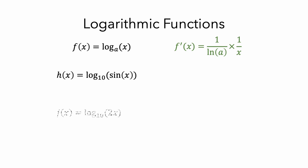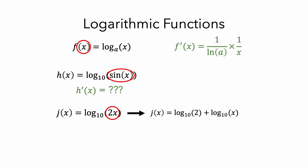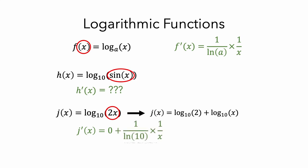Here are two more examples — can we use the rule with them? First, take a look at the input of h of x. The log rule only works when there is just an x for the function's input; it doesn't work if there is a sine of x inside, so we can't use the rule for finding the derivative of h of x. At first, it looks like j of x has the same issue, because the input isn't just x. But in this case, we can use properties of logarithms to rewrite j of x as the log base 10 of 2 plus the log base 10 of x. Then we can find its derivative — the log base 10 of 2 is a constant, so its derivative is 0, and the derivative of log base 10 of x is 1 over the natural log of 10 times 1 over x.